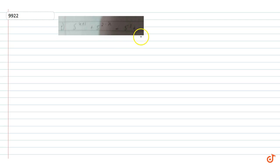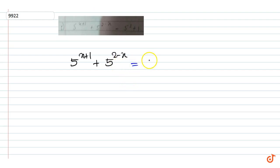In this question we have to solve 5 to the power x plus 1, plus 5 to the power 2 minus x, equal to 5 cubed plus 1. The equation can be written as 5 to the power x plus 1, plus 5 to the power 2 minus x, equal to 5 cubed plus 1.